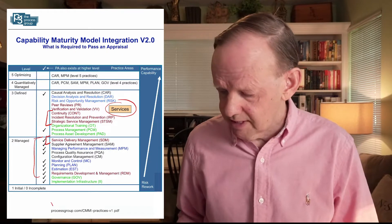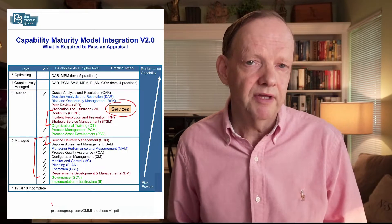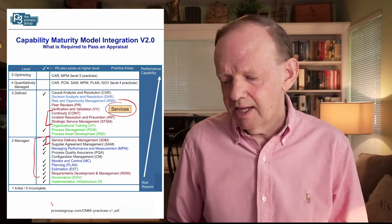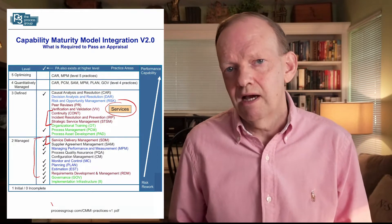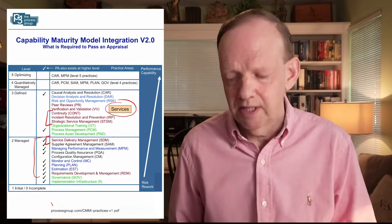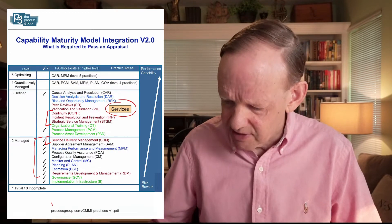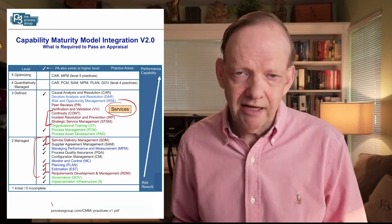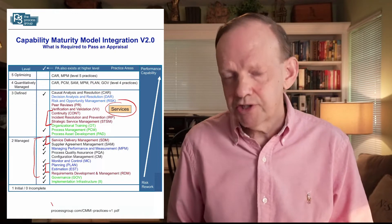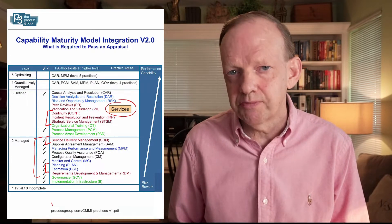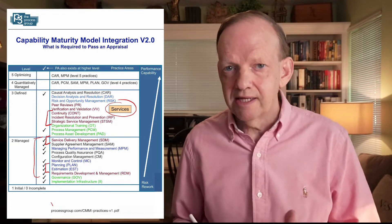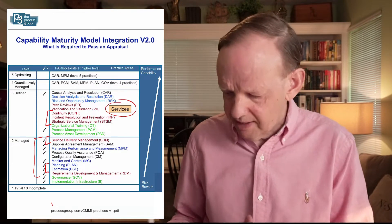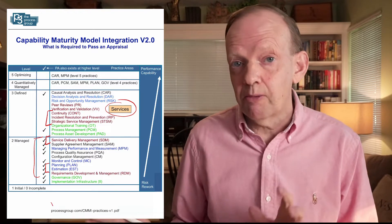Every model is defined further by practices — these are the practice areas. Each one is defined further, maybe into five to ten extra practices, and companies or projects are performing those practices in their own implementation. For example, if we take planning and estimation, you're going to plan and estimate before you commit, and you would have your own way to do that.